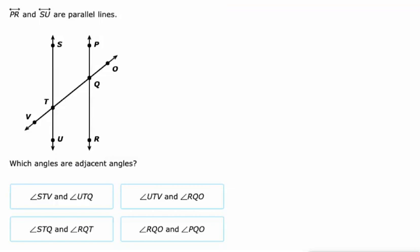What about adjacent angles? Looking for adjacent angles here. STV and UTQ — STV is this one, and UTQ is this one. Those are vertical angles; they share a vertex but they don't share an adjacent side. UTV and RQO — they don't share a vertex. RQO would be this one. Those are same side exterior angles. Not going to work for us.